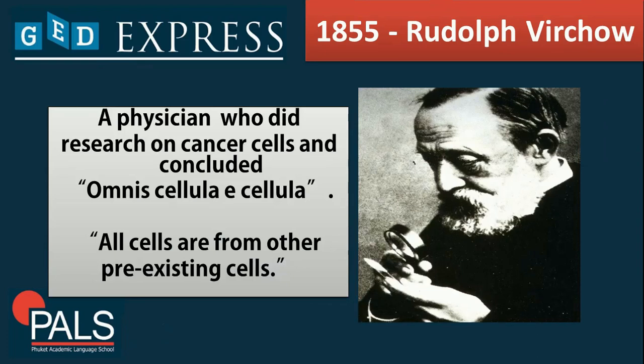On the year 1855, Rudolf Virchow was able to coin or conclude his discovery that all cells come from pre-existing cells. He is also known as a physician and he was able to make research on cancer cells.